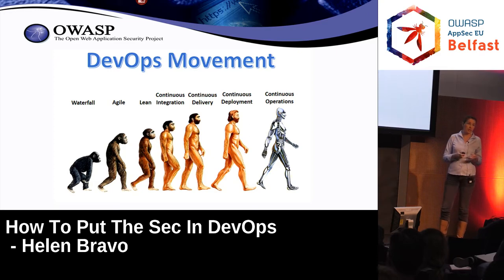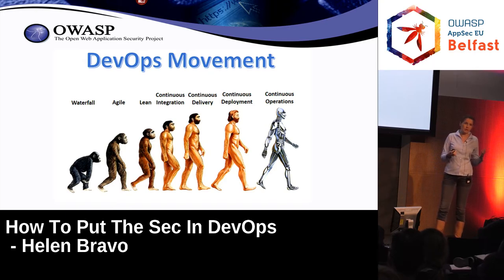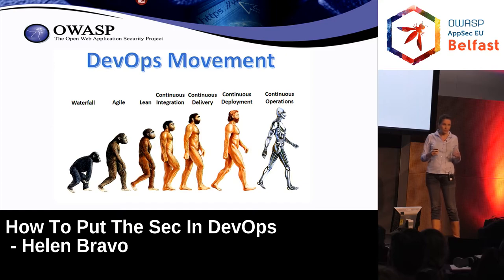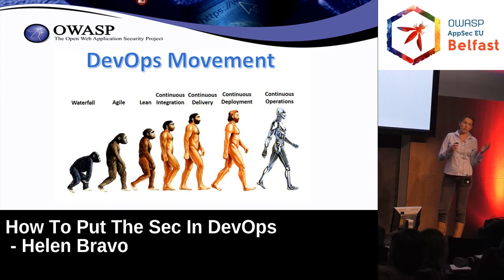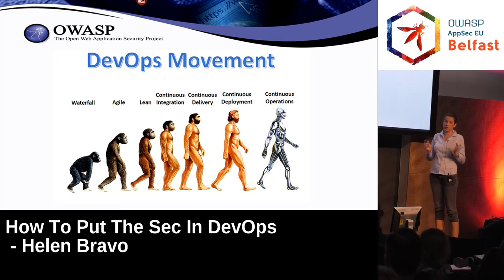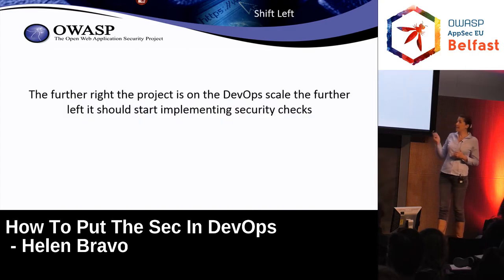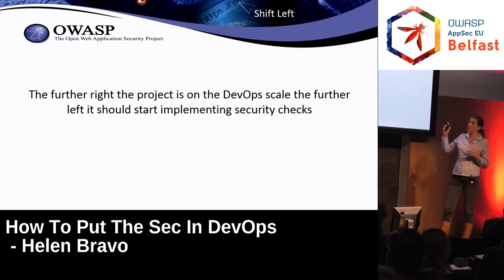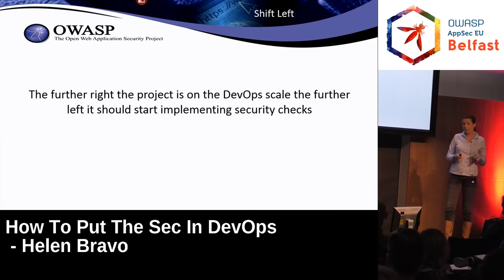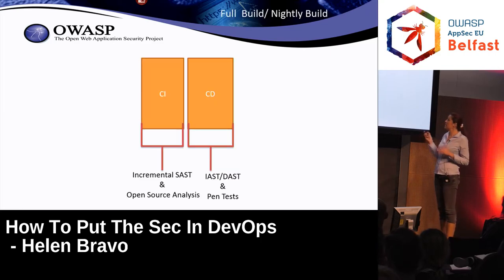For those different projects, you need to find a different implementation of security policy — otherwise they will reject it. There is a way to find how security might fit each stage and each flow the project is implementing. The important key sentence here is: the further right the project is on the DevOps scale, the further left the security should start.